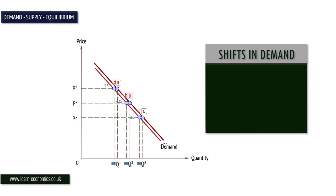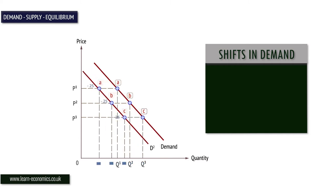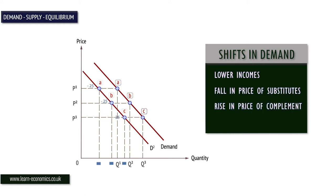Possible factors causing a decrease include lower incomes, assuming a normal good, a fall in the price of a substitute, an increase in the price of a complement, and changes in tastes and preferences.